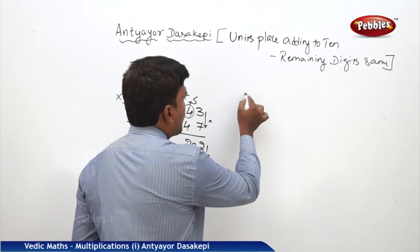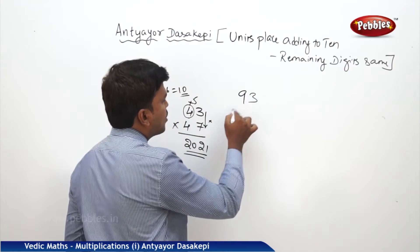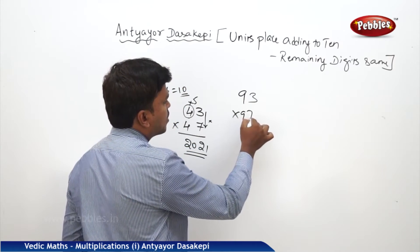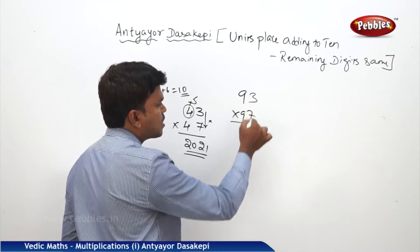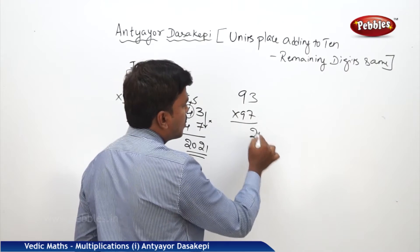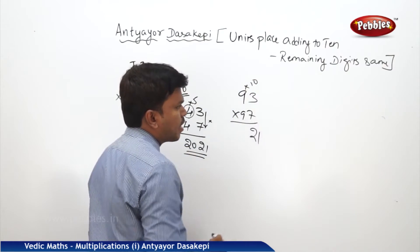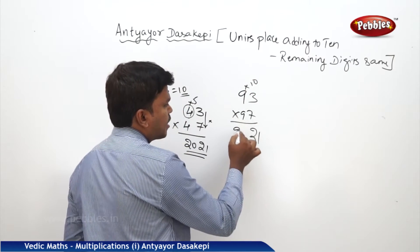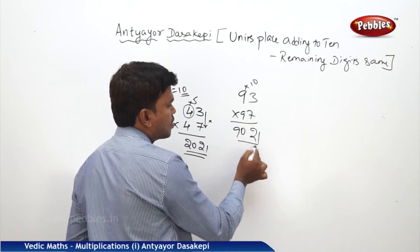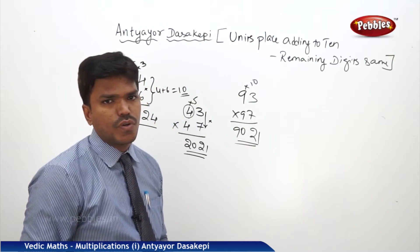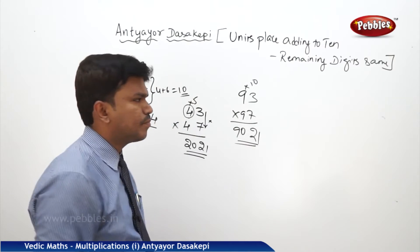One more example: 93 into 97. The ones digits: 3 times 7 are 21. Then 9 multiplied by its next number, which is 10, gives 90. So your answer is 9021.